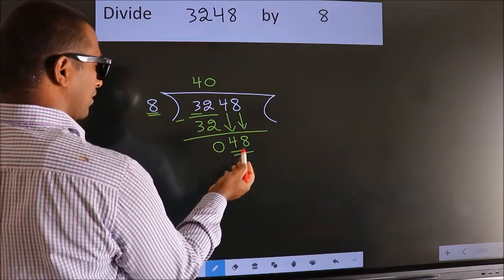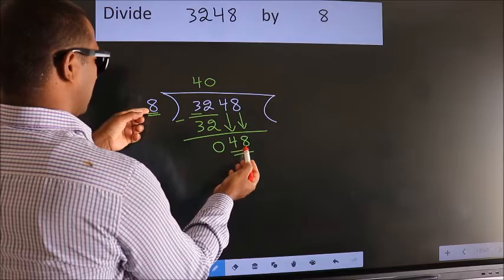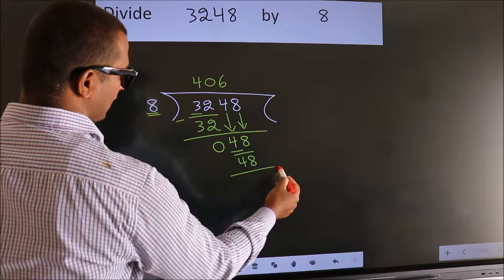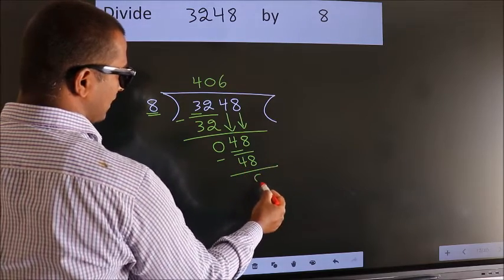When do we get 48? In 8 table. 8, 6, 48. Now, we subtract. We get 0.